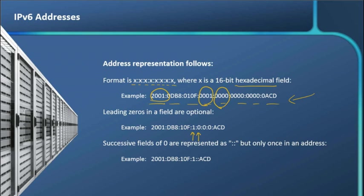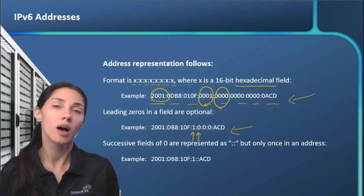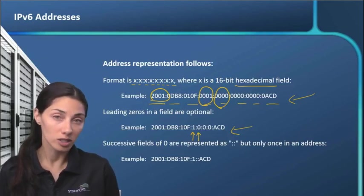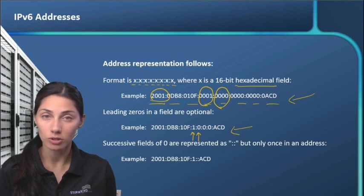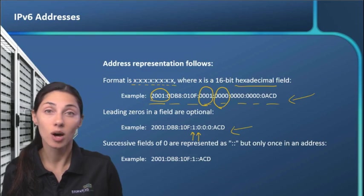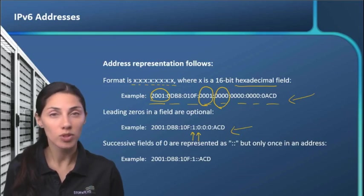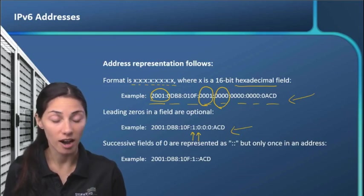Now another shortcut that we have here, these successive zeros. If we have multiple blocks of zeros, we can eliminate those multiple blocks of zeros with the double colon. We just have to remember that if we do decide to utilize that double colon, we can only use it one time throughout our IPv6 address. So those are some of the ways that we're going to be abbreviating our addresses.